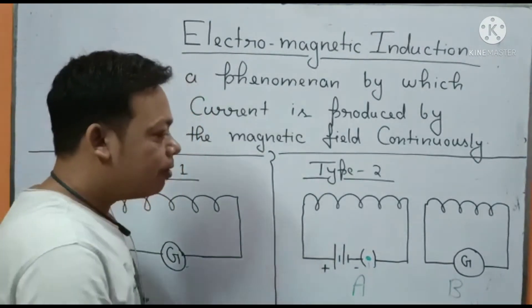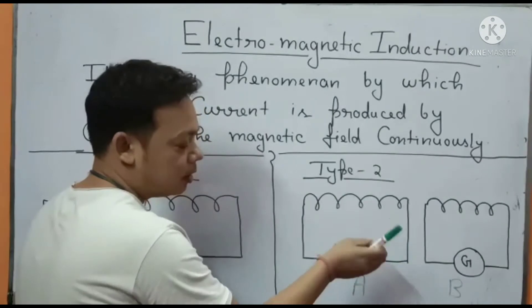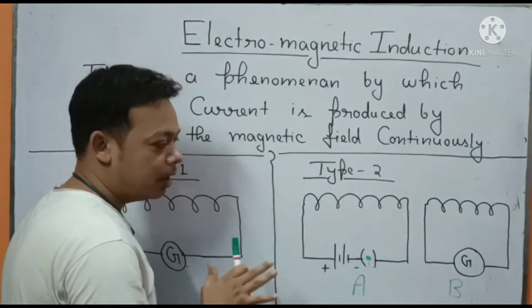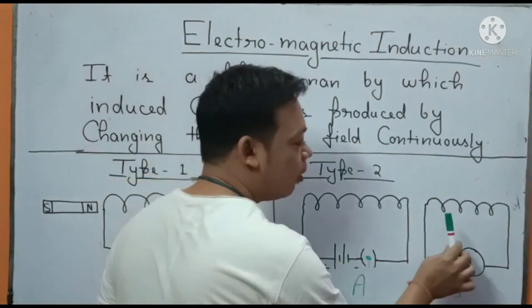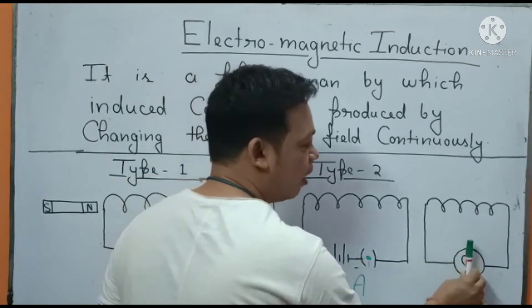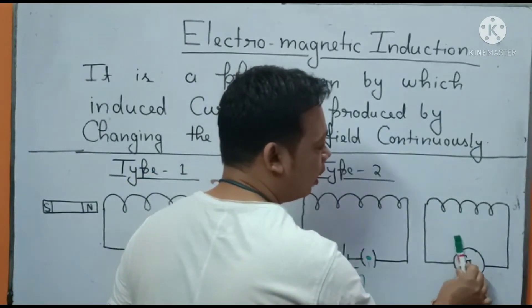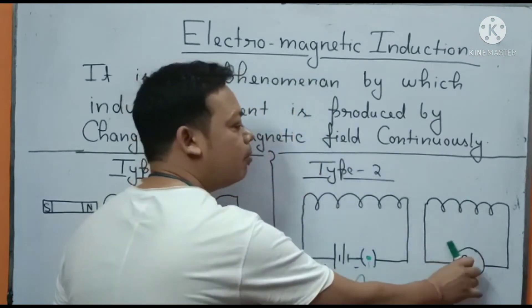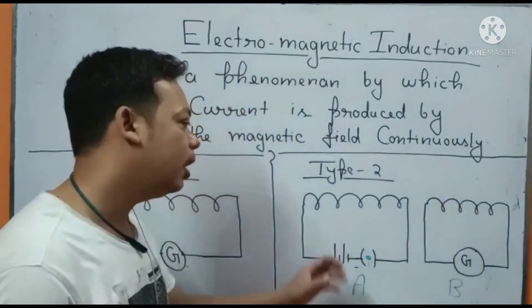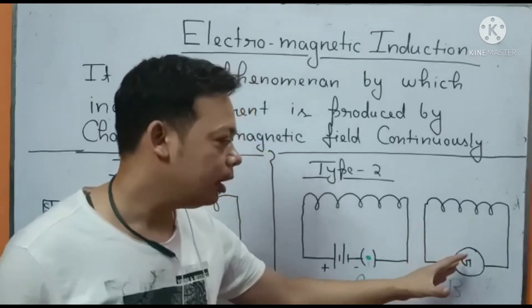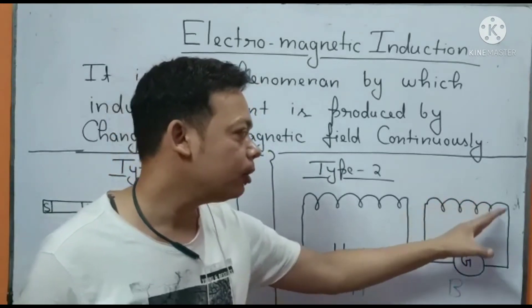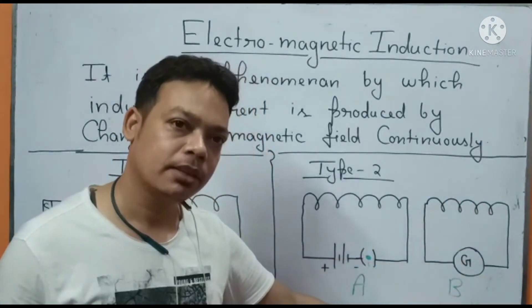If you continue the process of switching on and off, you will find that in coil B the galvanometer needle starts to deflect. This deflection justifies that there is a current flowing through this coil that is B.